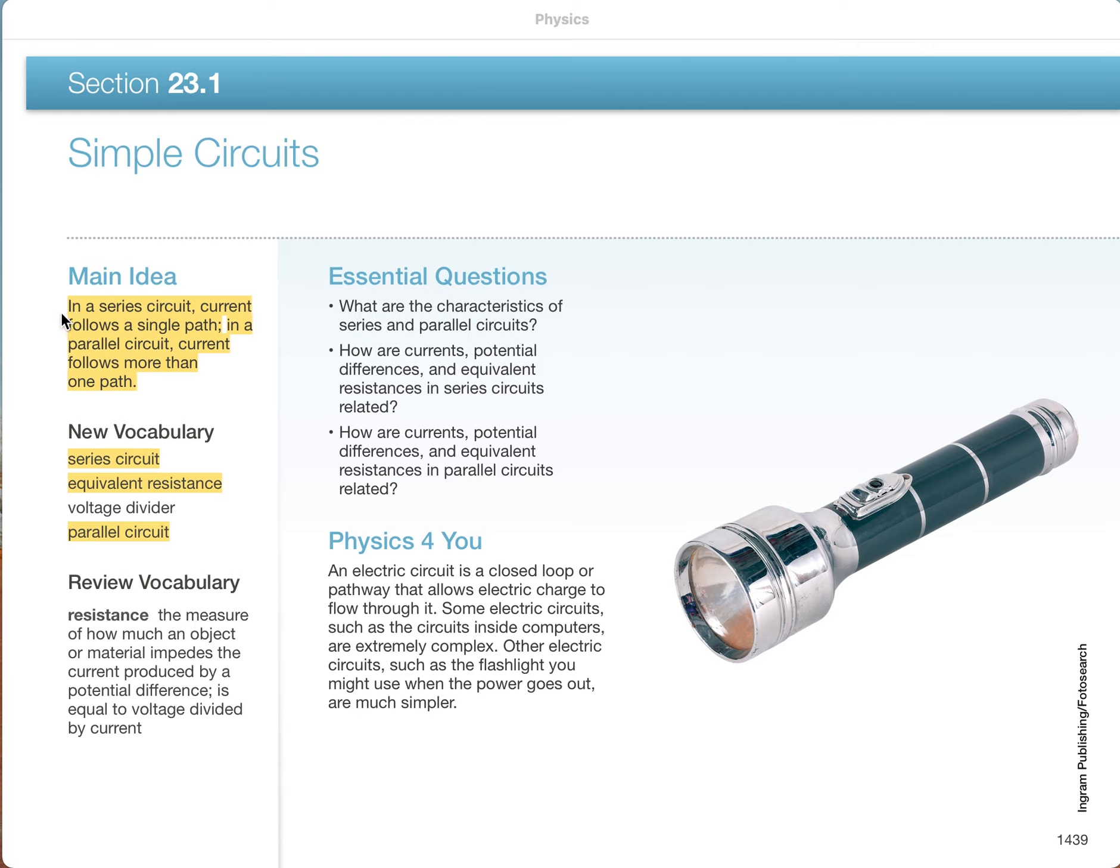A series circuit is a circuit in which there's only a single path, only a single current. In the next screencast, we'll talk about the alternative, which is the parallel circuit that has more than one path. As you read this unit, keep an eye on the terms series circuit and parallel circuit, and the term equivalent resistance.